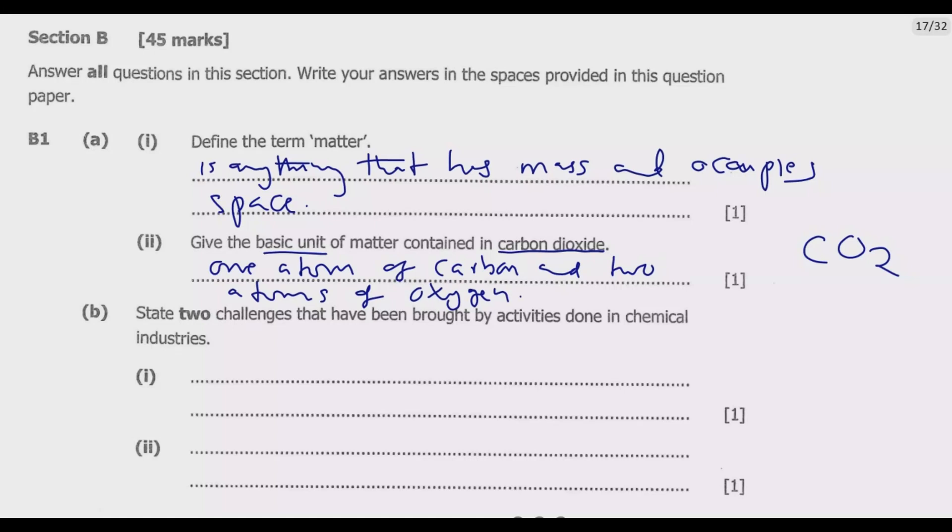Why are we saying one atom of carbon and two atoms of oxygen? Because the basic unit of matter is atom. Hence, in this carbon dioxide which is covalently bonded, it's made up of one atom of carbon and two atoms of oxygen.